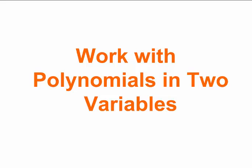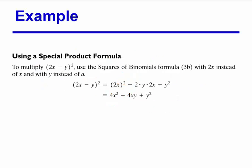Finally, we work with polynomials in two variables using a special product formula. To multiply 2x minus y to the second power, we use the square binomials formula with 2x instead of x and y instead of a. So 2x minus y squared becomes 4x squared minus 4xy plus y squared. That is the end of R4. Thank you.